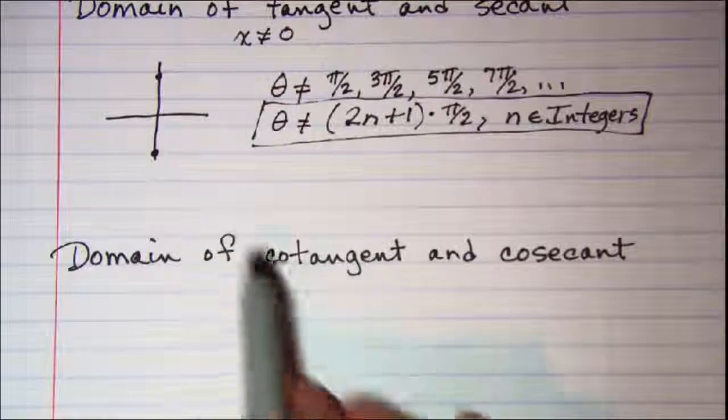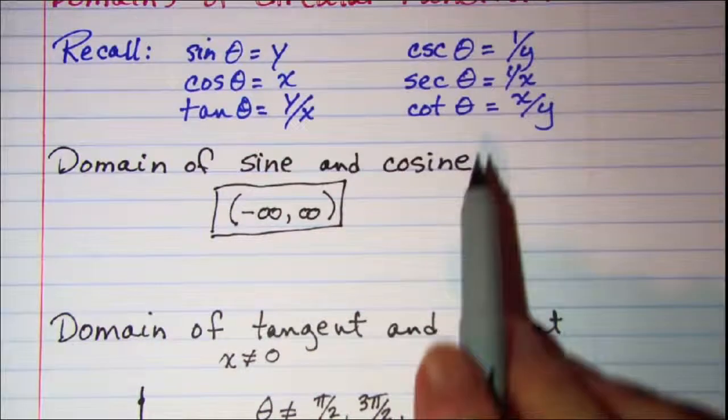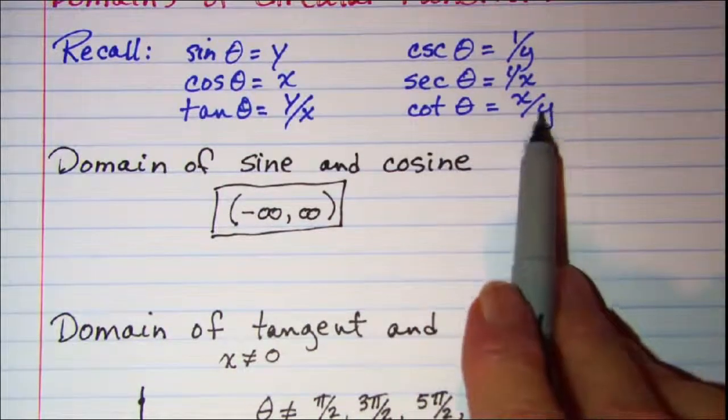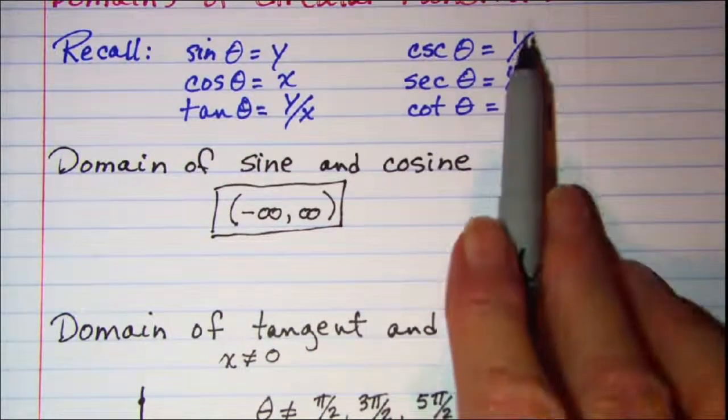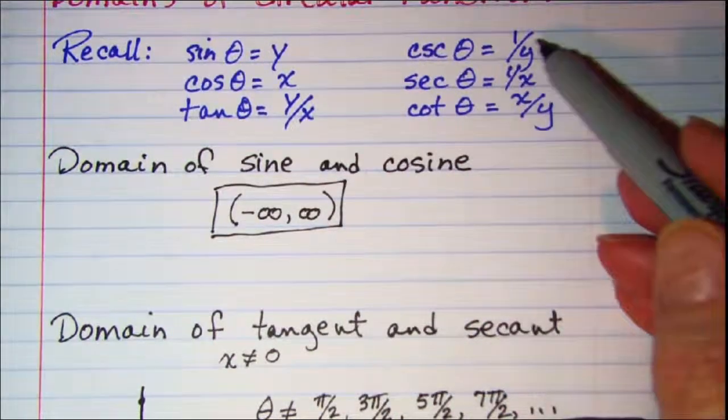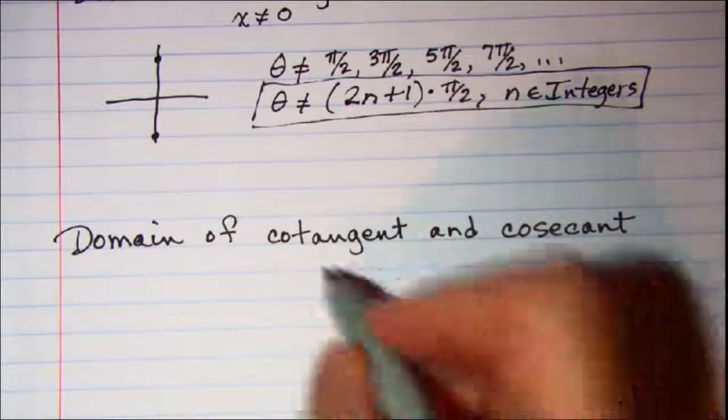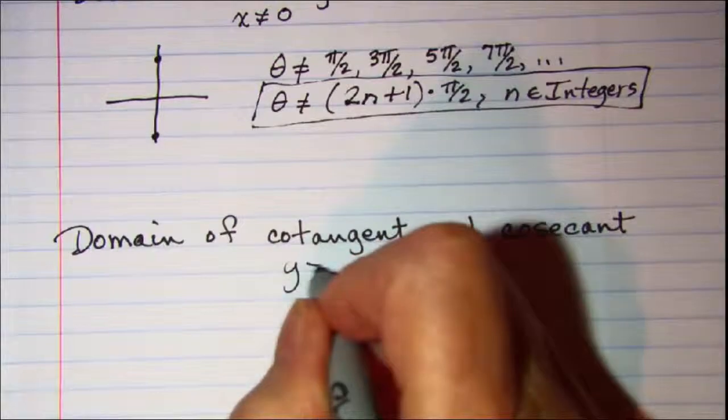Now for the domain of cotangent and cosecant: cotangent is x over y and cosecant is 1 over y, so both have y in the denominator. For the domain of cotangent and cosecant, y cannot equal 0.